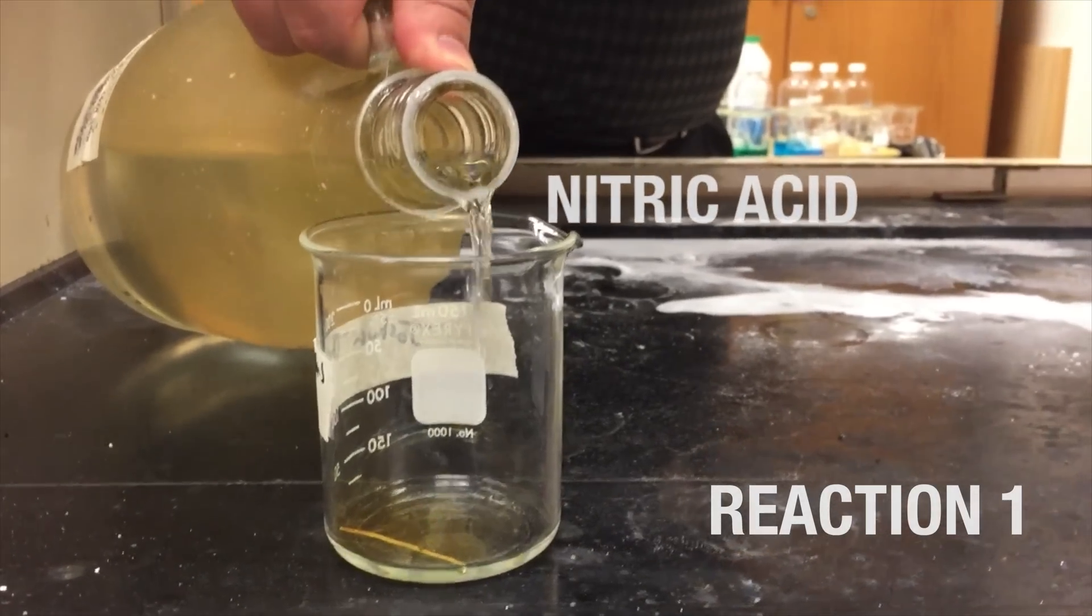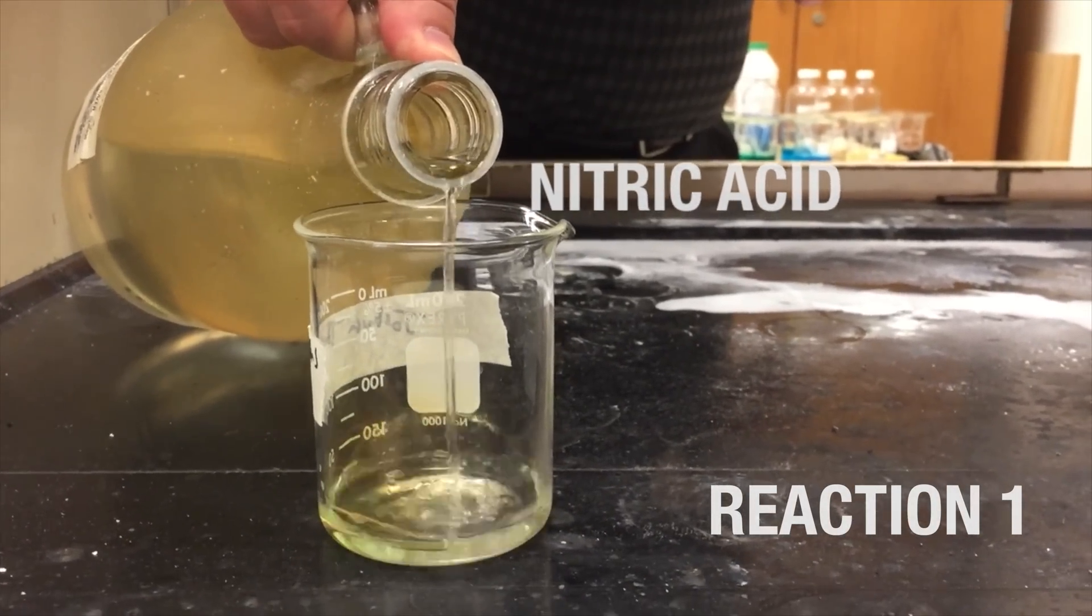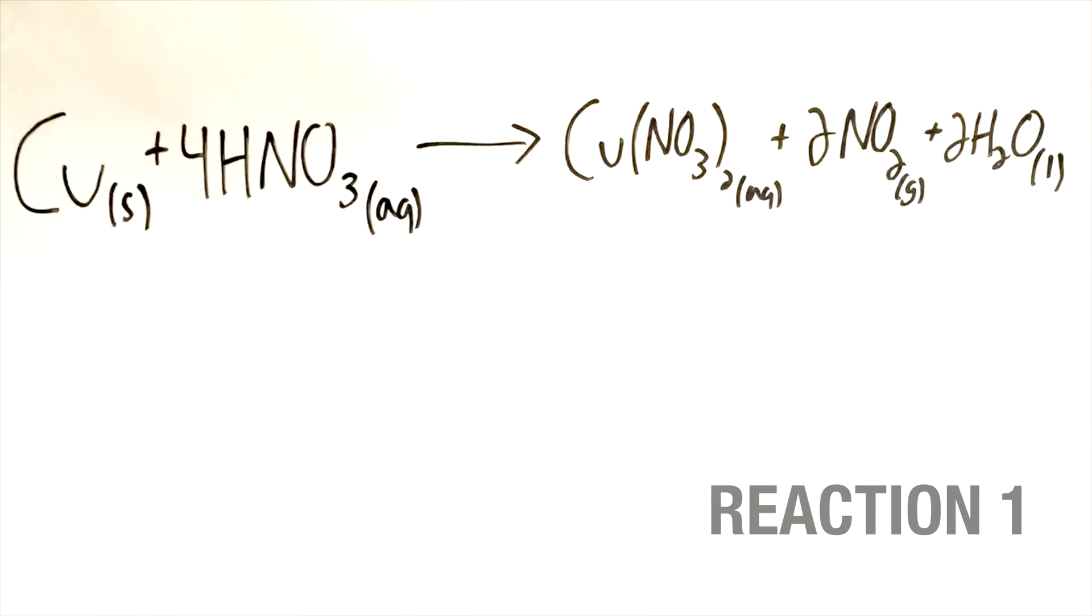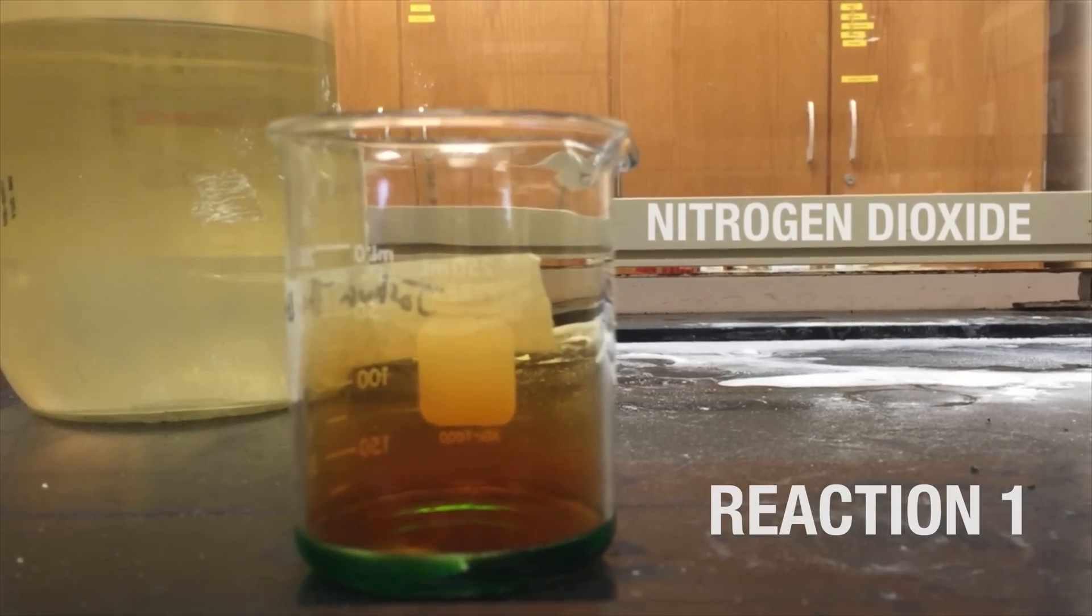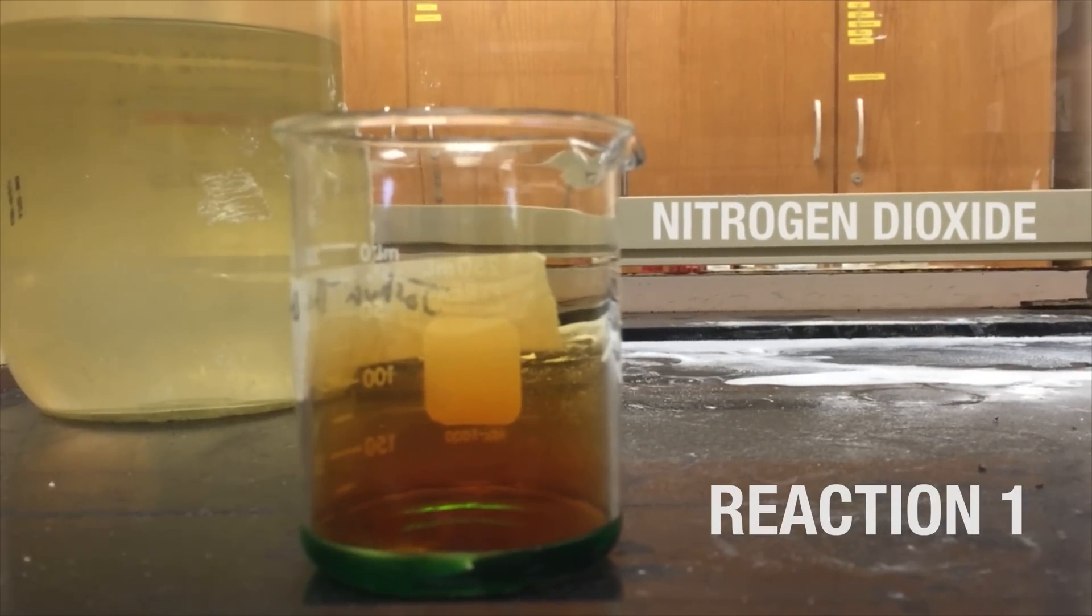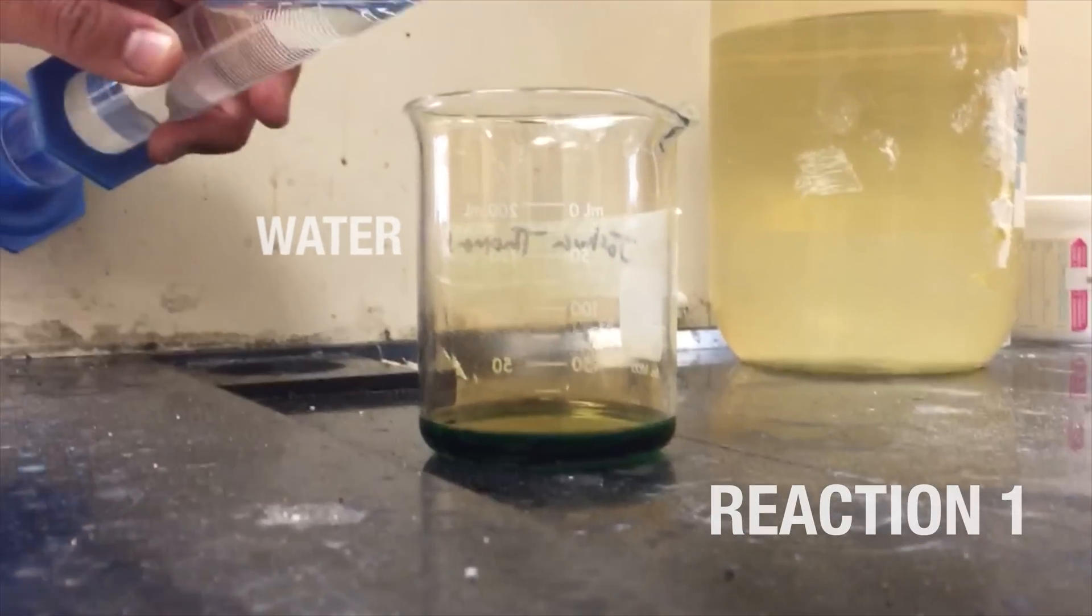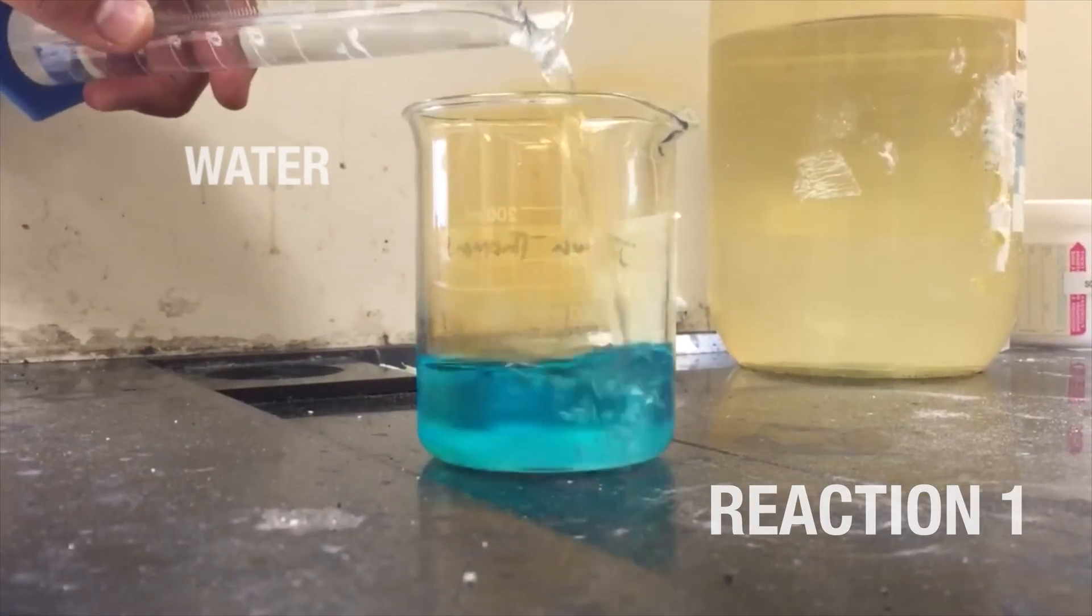We started by forming nitric acid on our 0.53 gram solid copper wire. The copper and nitric acid reacted to form copper nitrate, nitrogen dioxide, and water. The copper dissolved in the acid, which turned green. The brown gas escaping the beaker is nitrogen dioxide. Water is added as well, which changes the liquid to a light blue color.